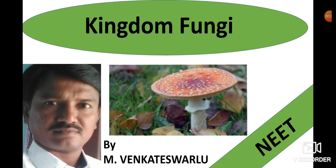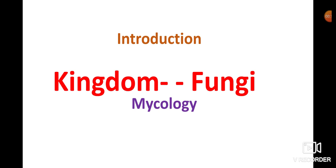In this session we are discussing Kingdom Fungi in the chapter Biological Classification. Scientist R.H. Whittaker proposed five kingdom classification, classifying living organisms into five kingdoms: Monera, Protista, Fungi, Plantae, and Animalia. His classification is based on criteria: cell structure, thallus organization, mode of nutrition, reproduction, and phylogenetic relationships. Today we are discussing the kingdom Fungi.